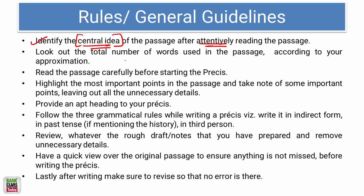As we know, the précis should be shorter than the original passage, so word limit is a constraint here. You have to express in fewer words whatever is in the given passage. Identify the total number of words in the passage — you can count one paragraph and approximate the total. Generally, one third of that word count can be used for the précis.